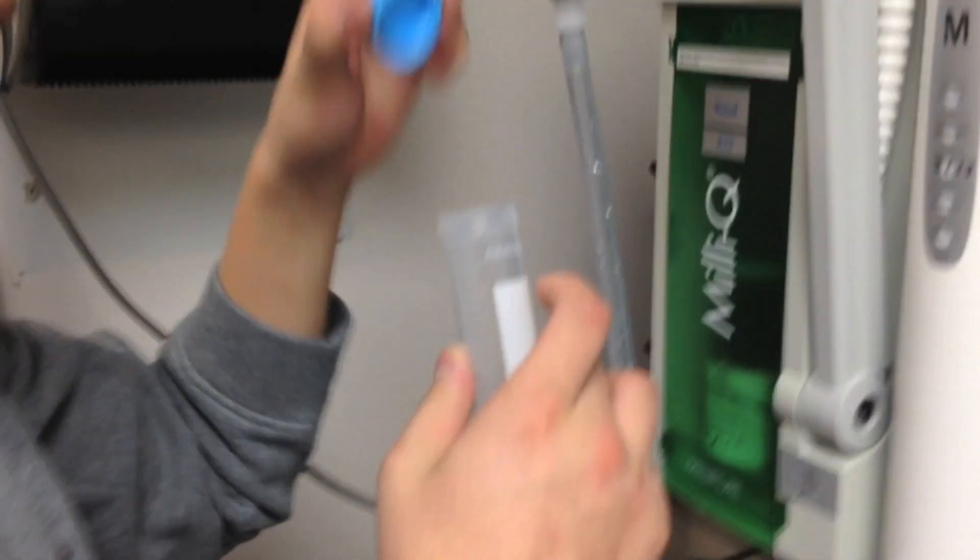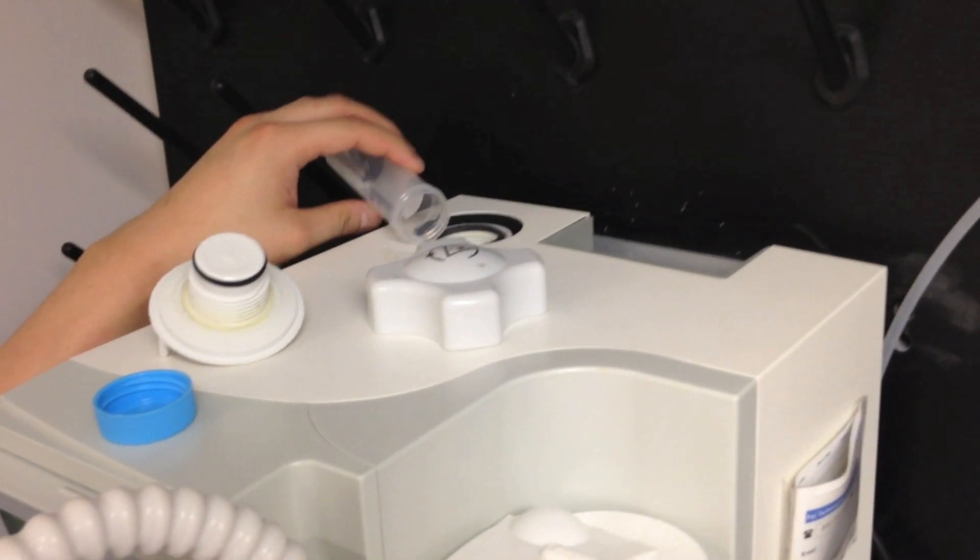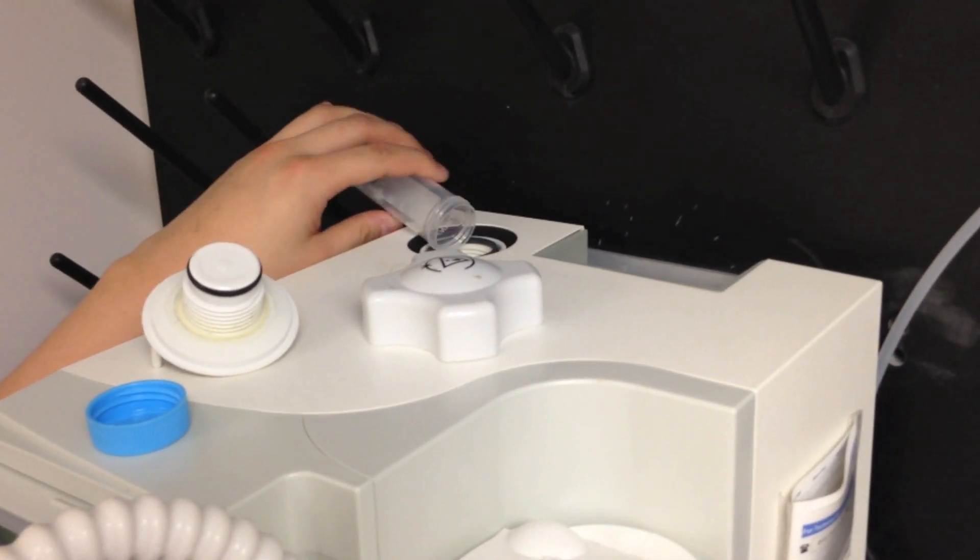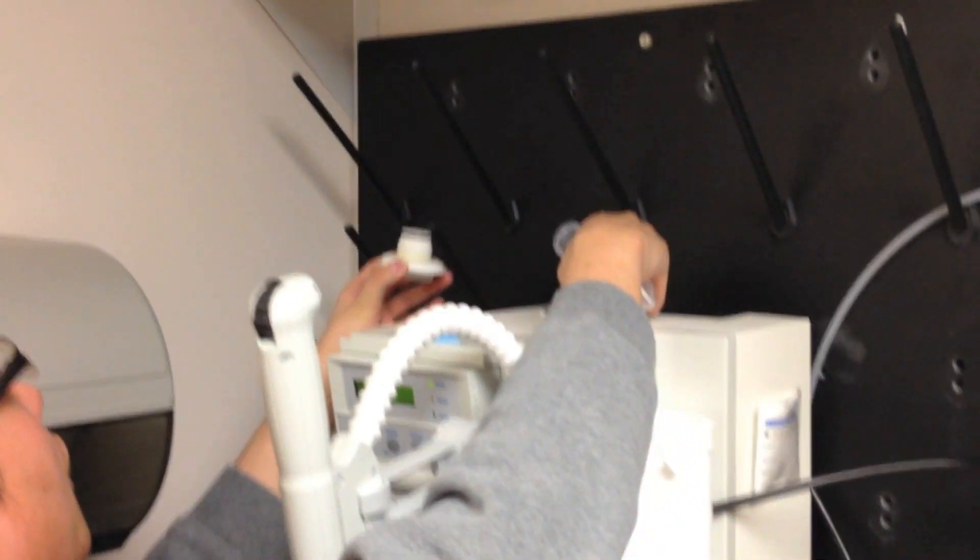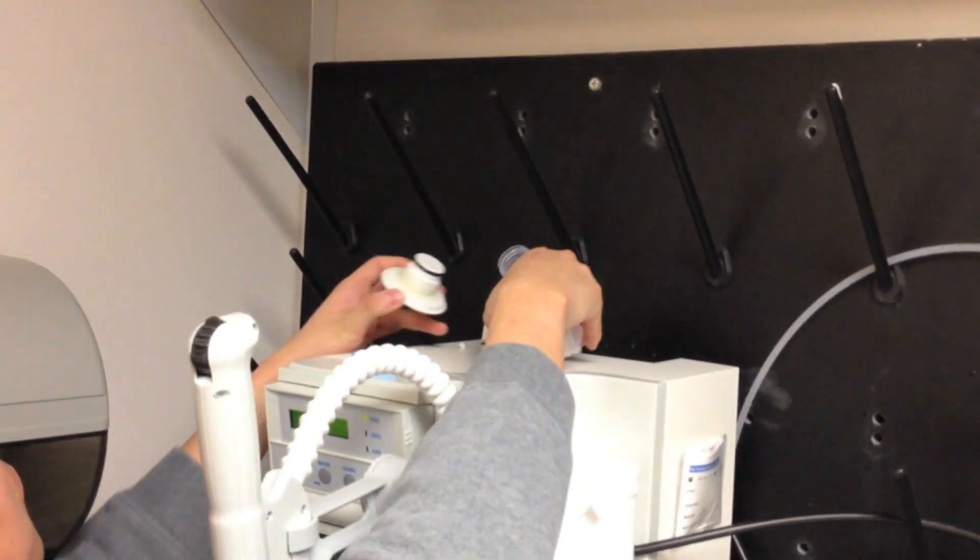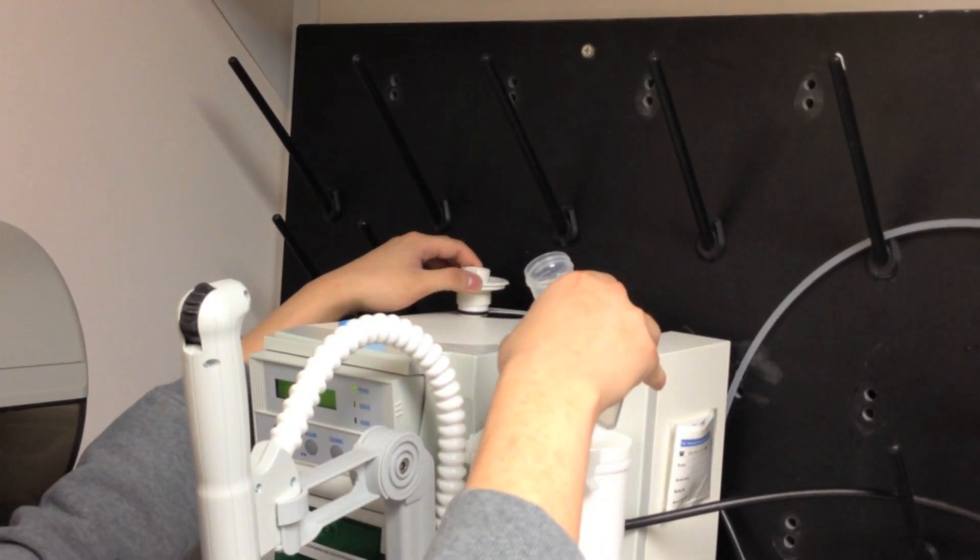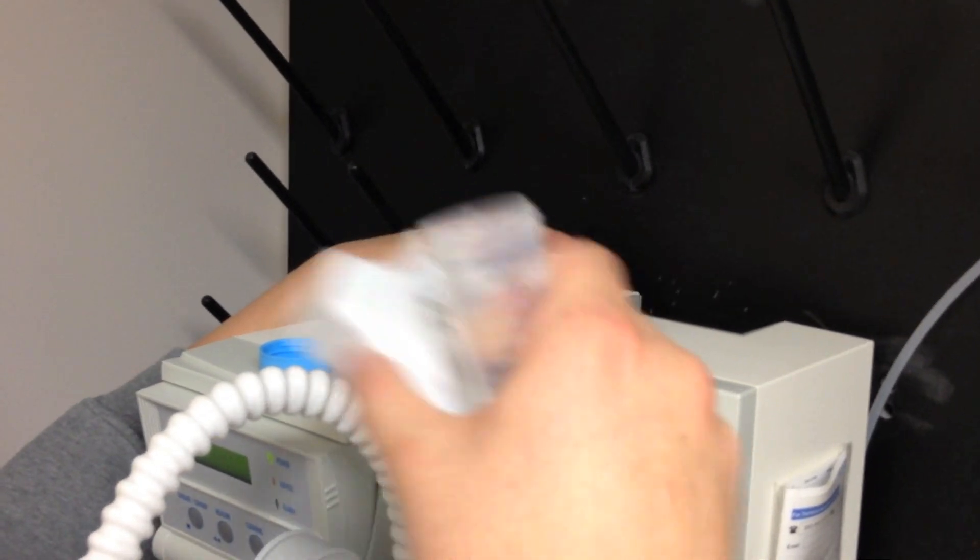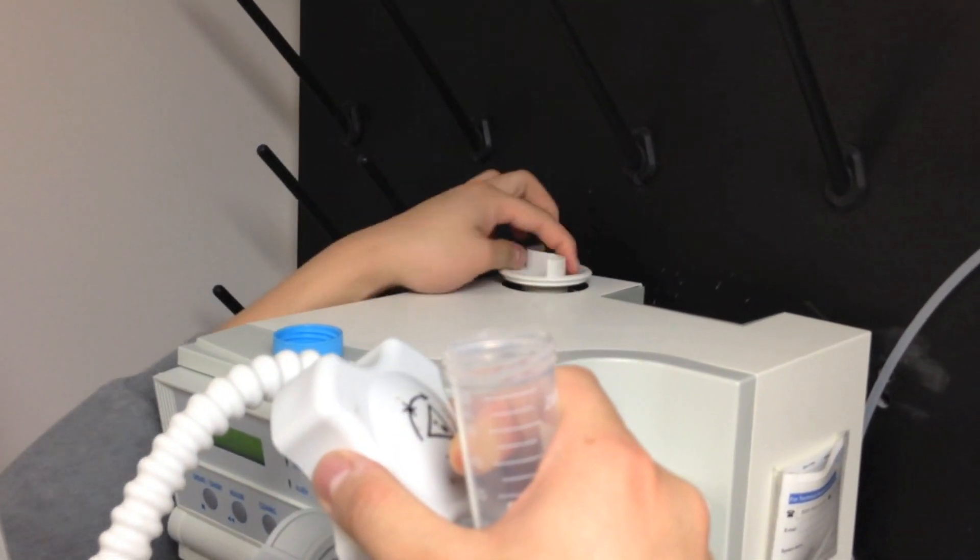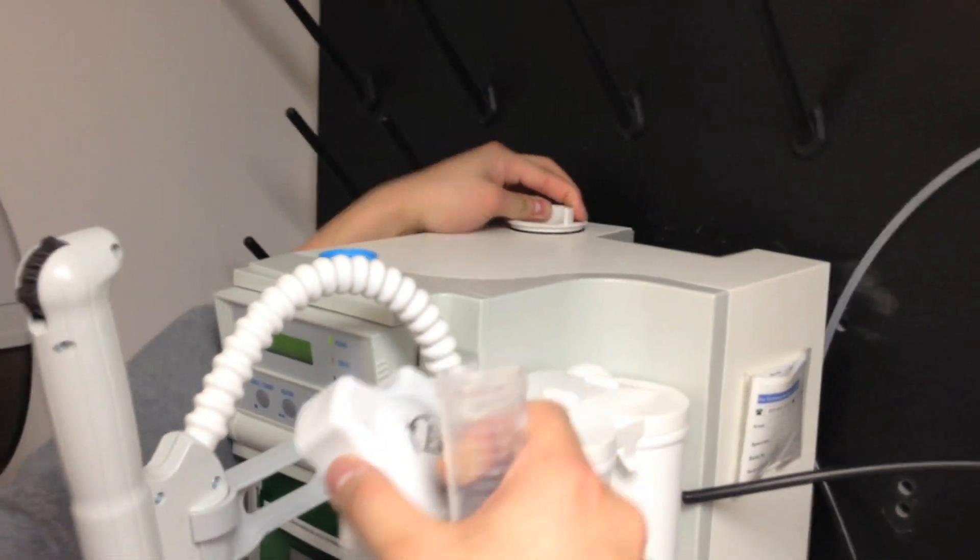Now put in your 3 grams of sodium hydroxide. Now you put the cap back on, and remember, don't use this opener. Just hand-tight it, otherwise it will be too tight. That should be good.